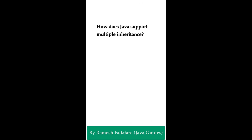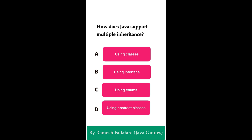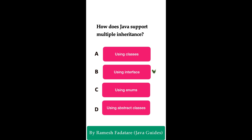Welcome to Java quiz series. Here is one more question: How does Java support multiple inheritance? Option A: using classes. Option B: using interfaces. Option C: using enums. Option D: using abstract classes. The correct answer is option B: using interfaces. Java does not support multiple inheritance through classes due to complexity and potential issues such as the diamond problem.